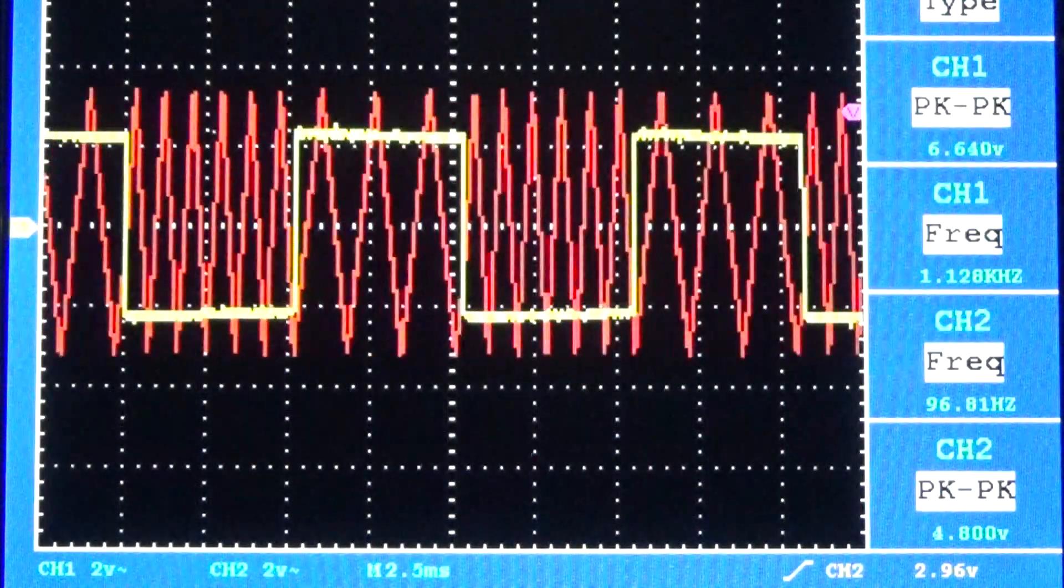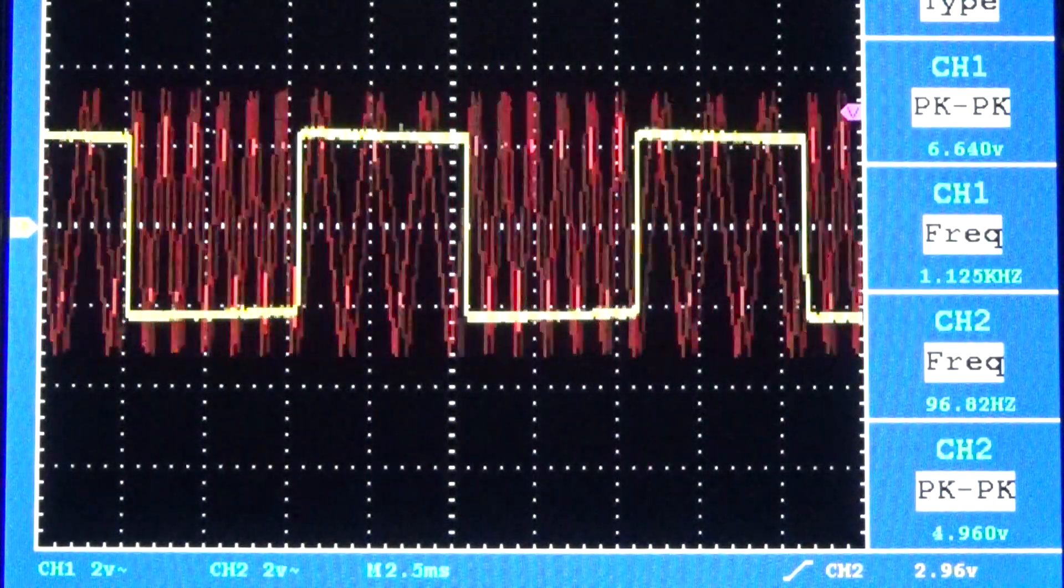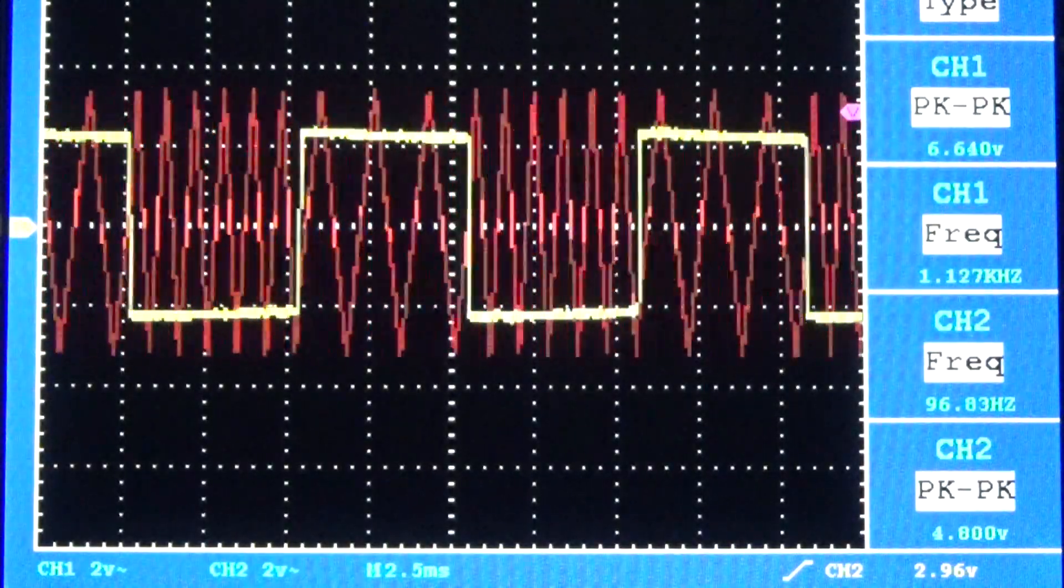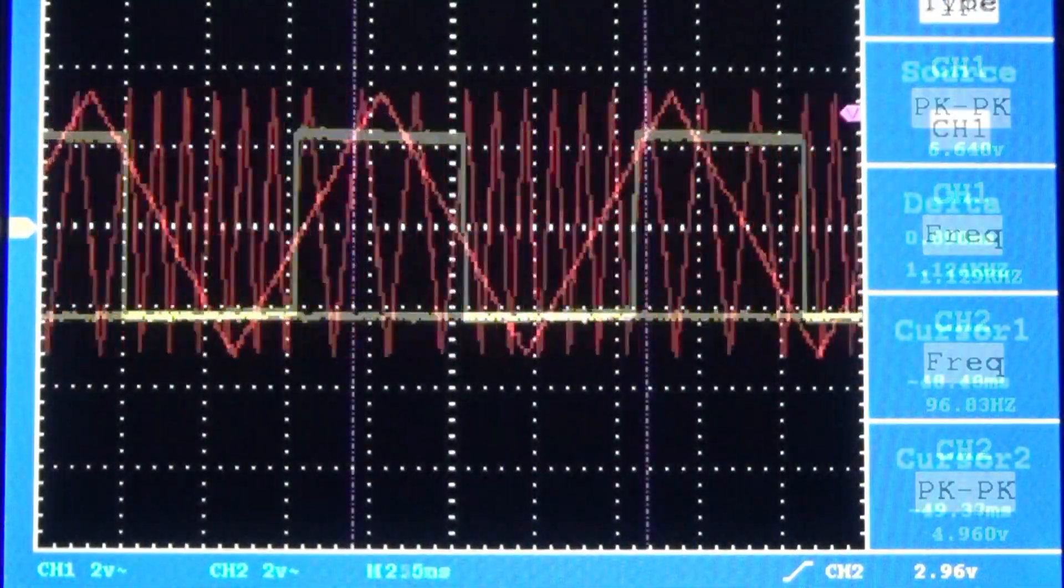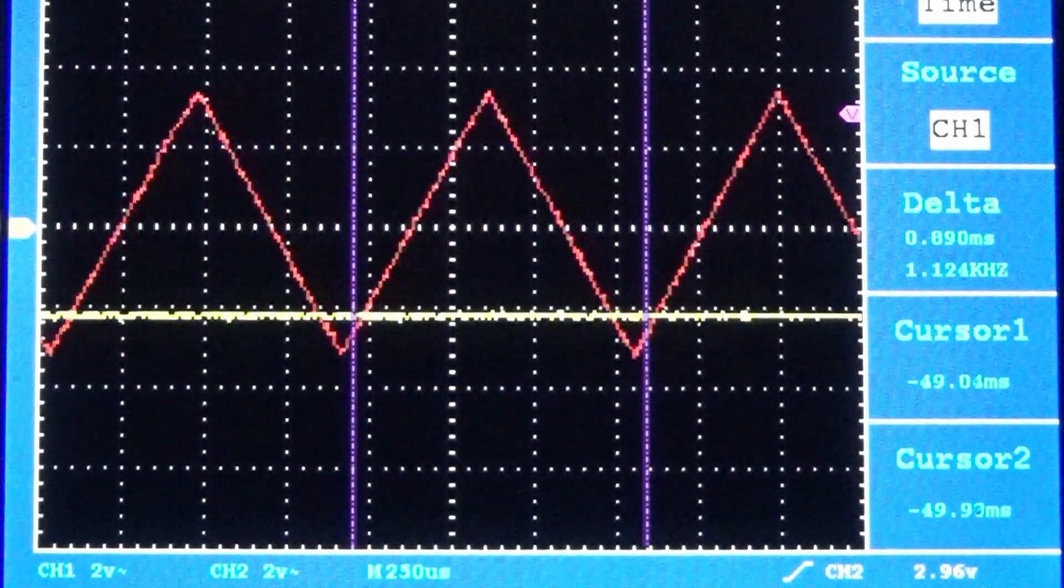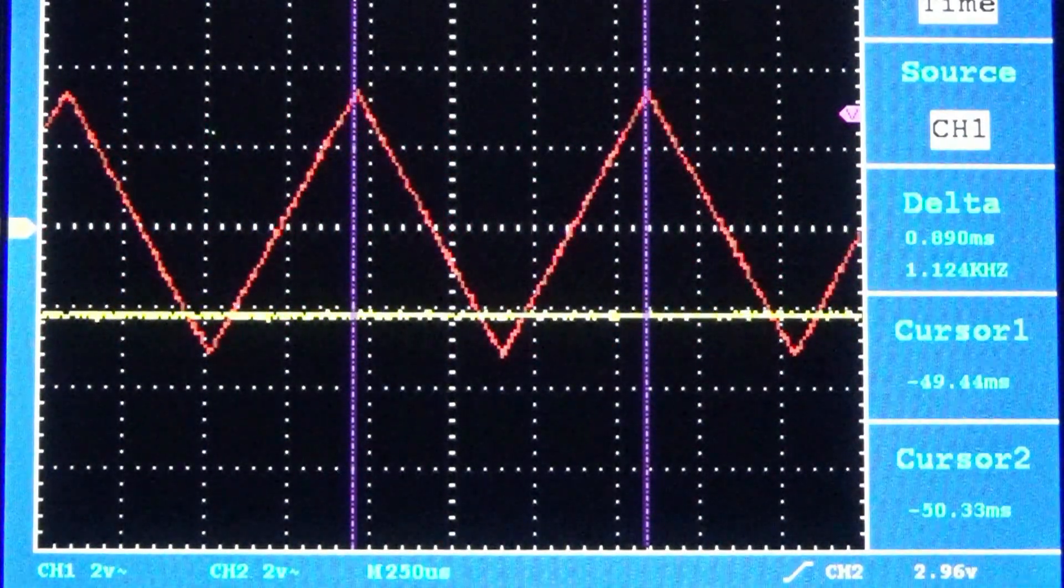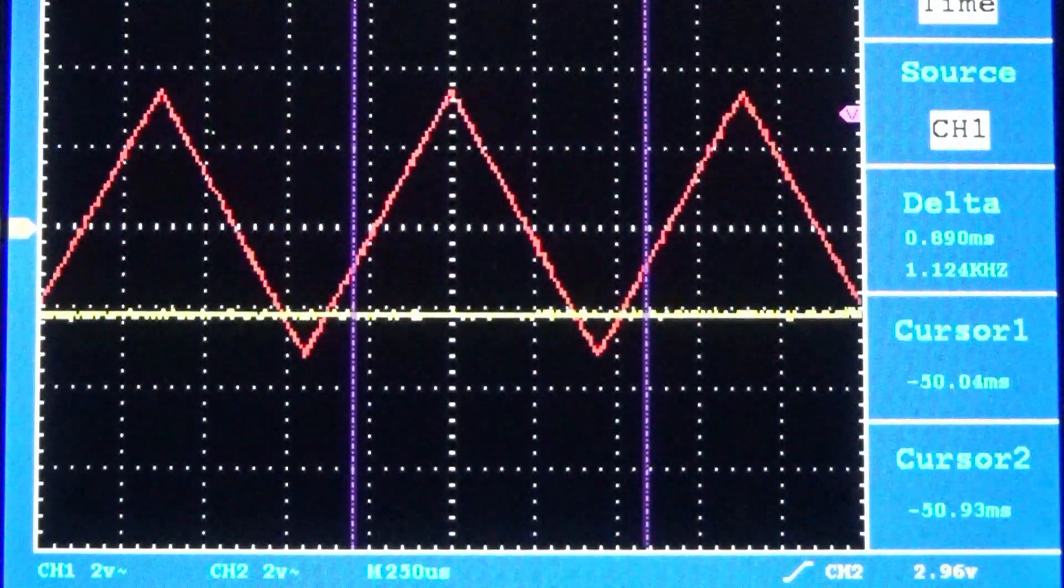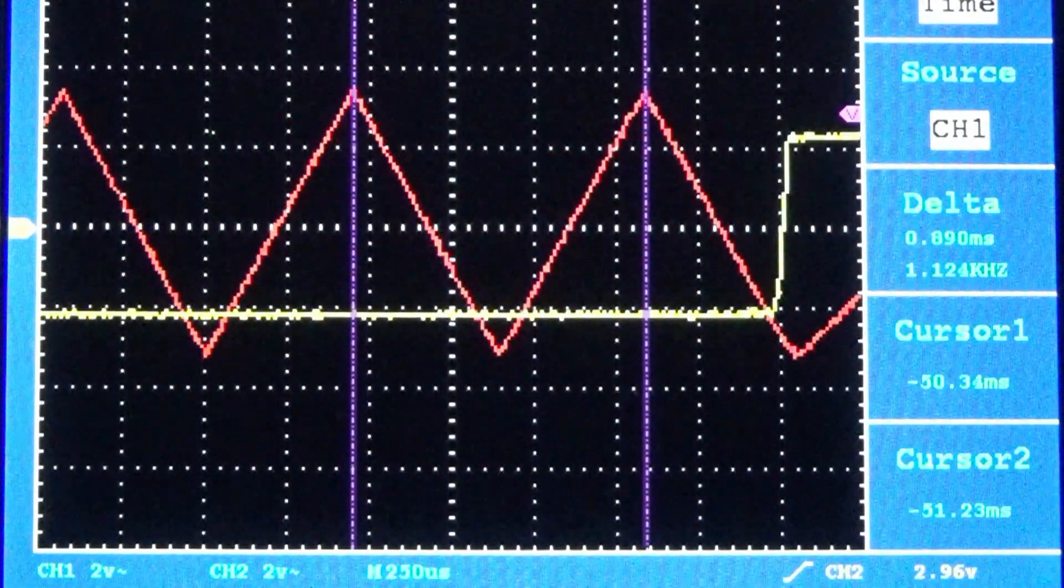We'll take a closer look at these waveforms and then look at a few equations to explain the instantaneous frequency of the output. Here's a closer look at the message and the output signal. The message, which is a square wave, alternates between a minimum and a maximum value. The purple cursors are measuring the output frequency, which is approximately 1.12 kHz. We see that for the minimum value, this output frequency is constant.